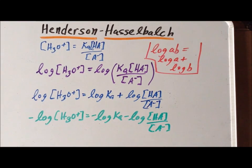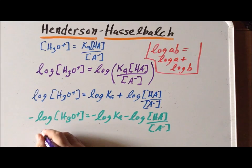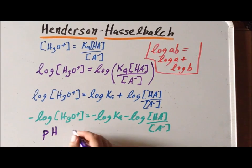And one thing we can recognize is why we did that particular step. The negative log of H3O plus is simply the pH. The negative log of the Ka is the pKa.